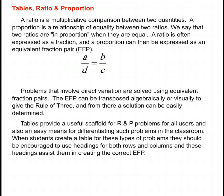A ratio is a multiplicative comparison between two quantities. A proportion is a relationship of equality between two ratios. We say that two ratios are in proportion when they are equal. A ratio is often expressed as a fraction, and a proportion can then be expressed as an equivalent fraction pair.